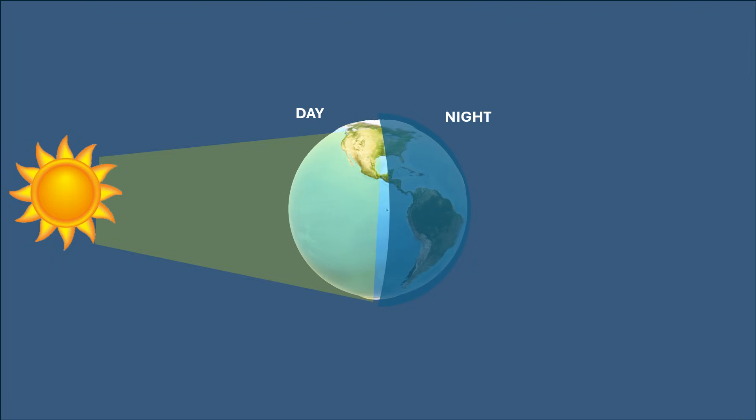Different places move into the sunlight and then into the darkness. That is why day changes to night and night changes to day every single day.